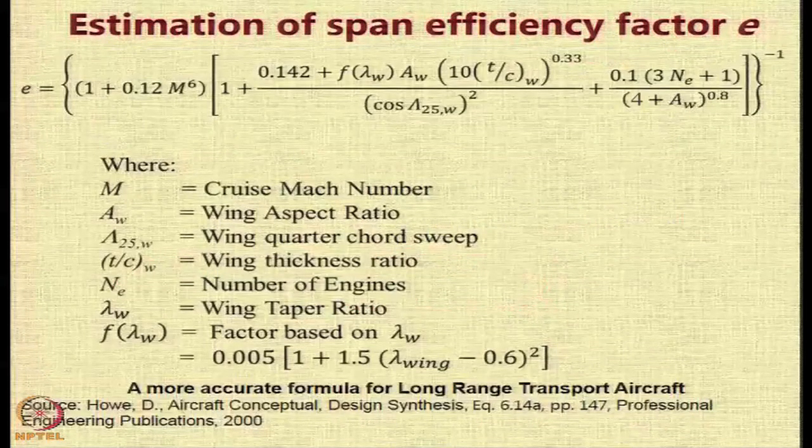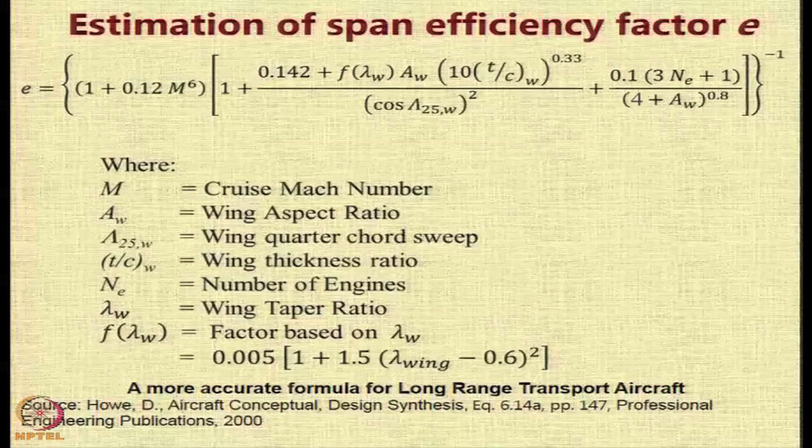A more accurate, a more detailed formula for estimation of the span efficiency E for a long range transport aircraft is given by Professor Dennis Howe in his book. Here you can see it is a very long formula and it relates the Oswald efficiency or the span efficiency factor E with the Mach number, the aspect ratio, the quarter chord sweep, the T by C, number of engines, taper ratio and a factor based on the taper ratio.